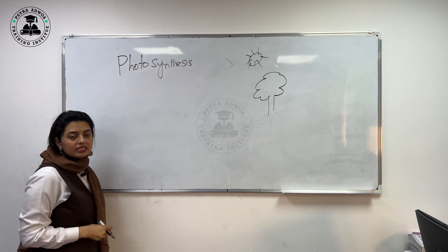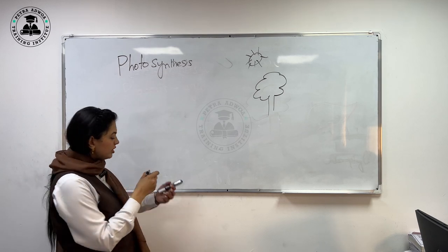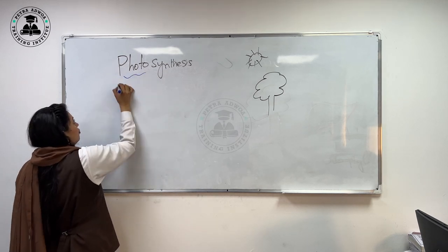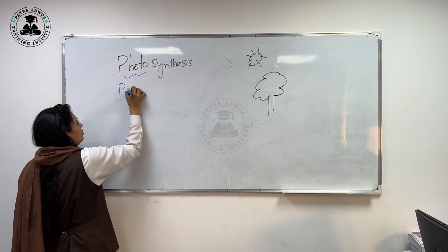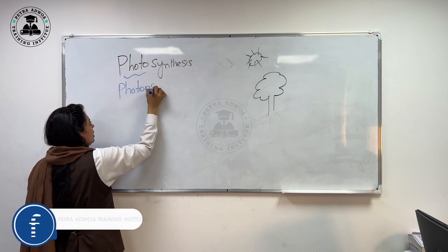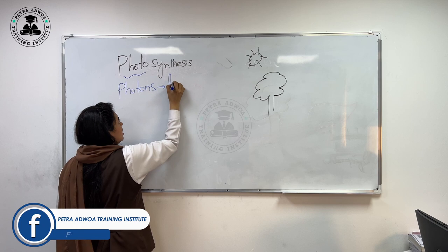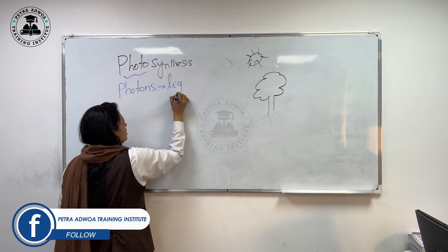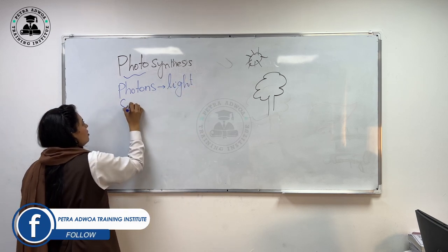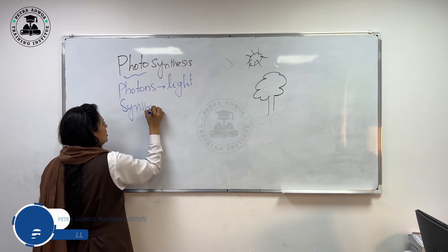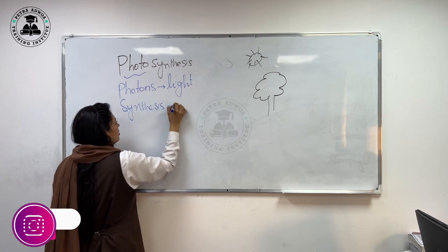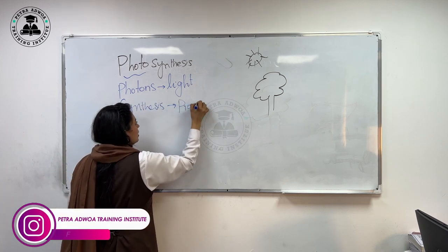Basically, photosynthesis consists of two words. Photo is derived from the word photon. Do you know what photon means? It means light. And the other one is synthesis, which means where the production of something will occur.